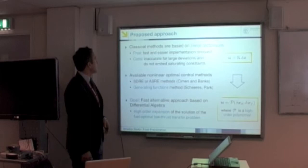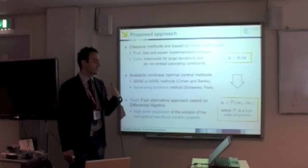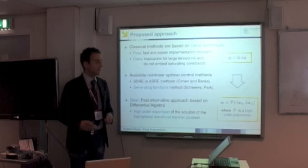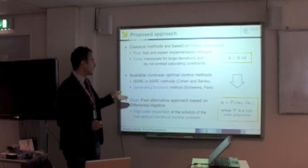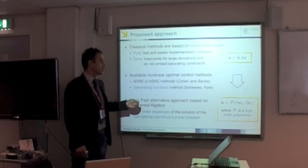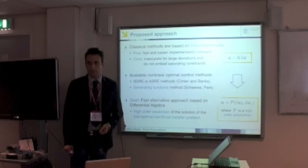Classical methods to cope with uncertainties are based on linear techniques. They have the advantage of being fast and easy to be implemented on board. On the other hand, they tend to be inaccurate for large errors, and moreover, they do not embed saturating constraints in general in the control. There are of course available nonlinear optimal control methods, for example, the state-dependent Riccati equation method, or the more recent method developed by Shears and Park, based on the use of generating functions.